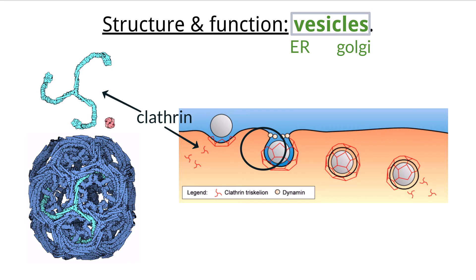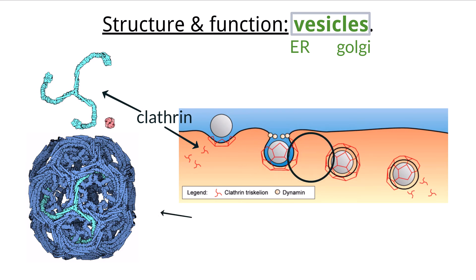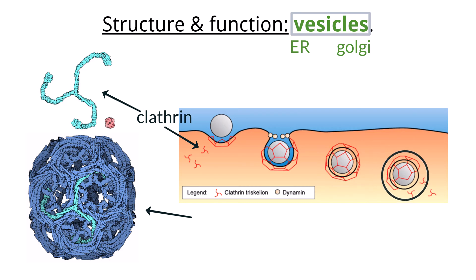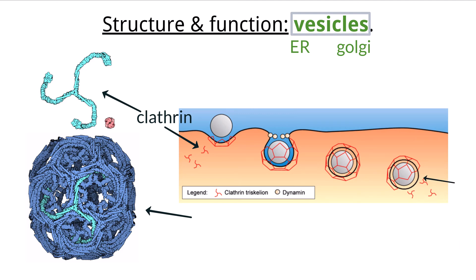The proteins continue to bind and manifest into a lattice of pentagons or hexagons which form a cage around the membrane of the vesicle, supporting its creation. Before the vesicle can fuse with its target membrane, the clathrin cage structure will break off and uncoat the vesicle, allowing the membrane of the vesicle to connect to its final location and deliver either the transported materials inside or pieces of the membrane itself if the cell or organelles are growing in size and need additional phospholipids and membrane proteins to function.